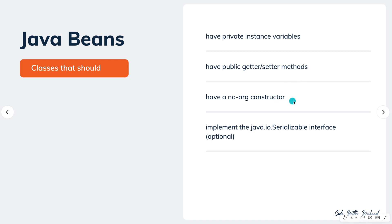A Java bean should have a no-argument constructor and should implement the java.io.Serializable interface, though this last step is optional. Any class which satisfies the three properties — private instance variables, public getter and setter methods, and a no-argument constructor — is classified in Java as a Java bean.